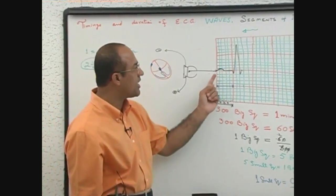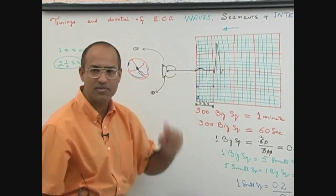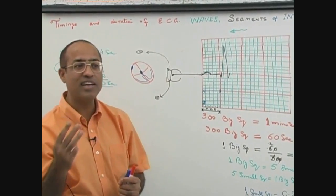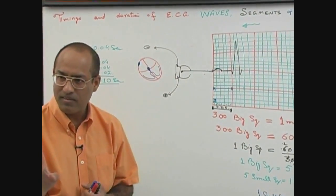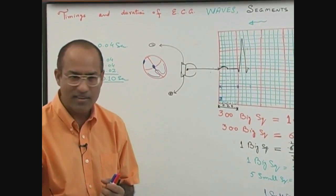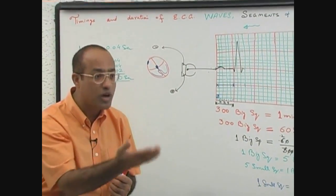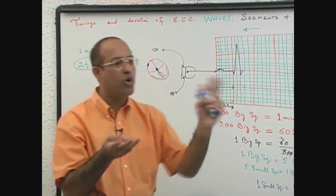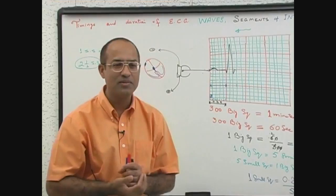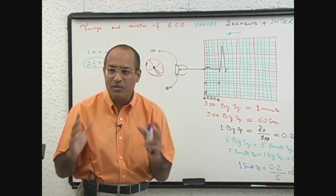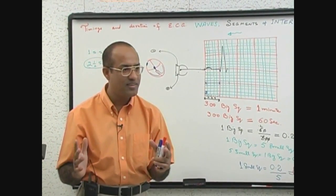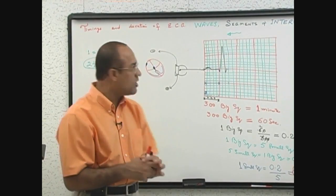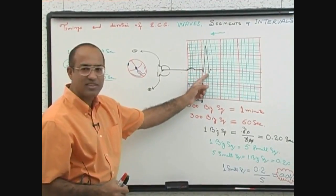Now we have done 3, then 2 and a half, 2 and a half, 2 and a half. So 3 plus 2 and a half makes 7 and a half. You are intelligent enough to know that 3 plus 2 and a half equals 7 and a half. And if you put one more 2 and a half, it becomes 10. Is it difficult to remember 10 small squares? So up to now 7 and a half small squares are there.